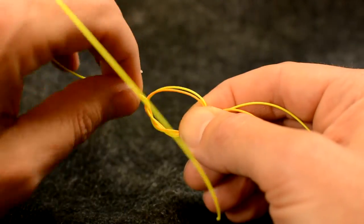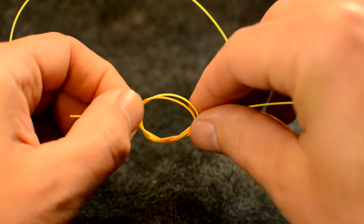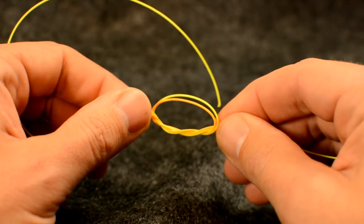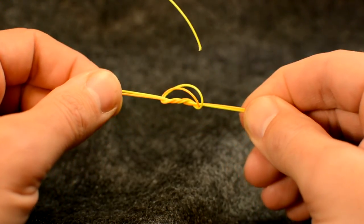Now grab both tag ends and both main lines, moisten the knot, and gently tighten with equal pressure on all lines.